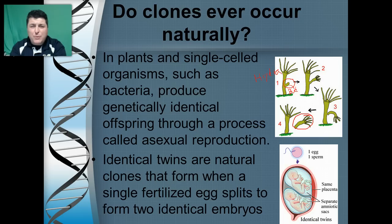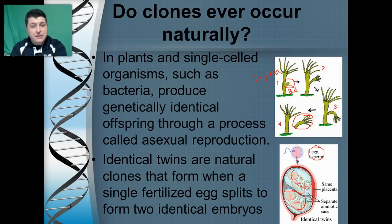Identical twins are another example of natural cloning. At some point during development, a single fertilized egg splits such that we have two separately dividing entities, producing two offspring that are genetically identical to one another — another natural clone.